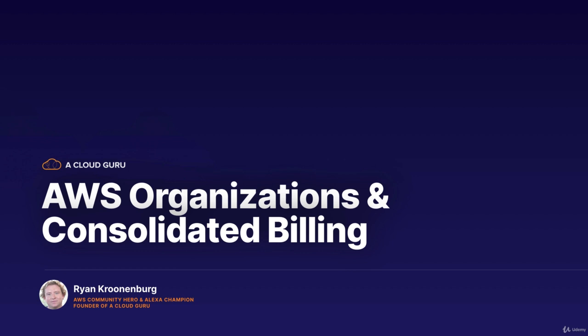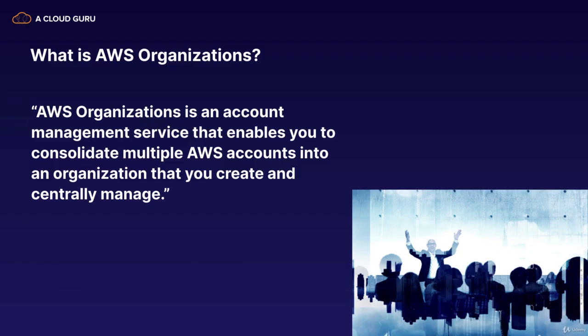Now, I know you must be wondering — I thought this was an S3 section of the course. Why are we looking at AWS Organizations and Consolidated Billing, and what do they have to do with S3? Well, in the next lecture, we're going to look at how we can do cross-account access with S3, so how we can use another AWS account's S3 buckets. But the only way we can enable that is by turning on AWS Organizations. So I want to spend this lecture telling you what AWS Organizations is and how Consolidated Billing works, and then in the next lecture we'll go back to S3.